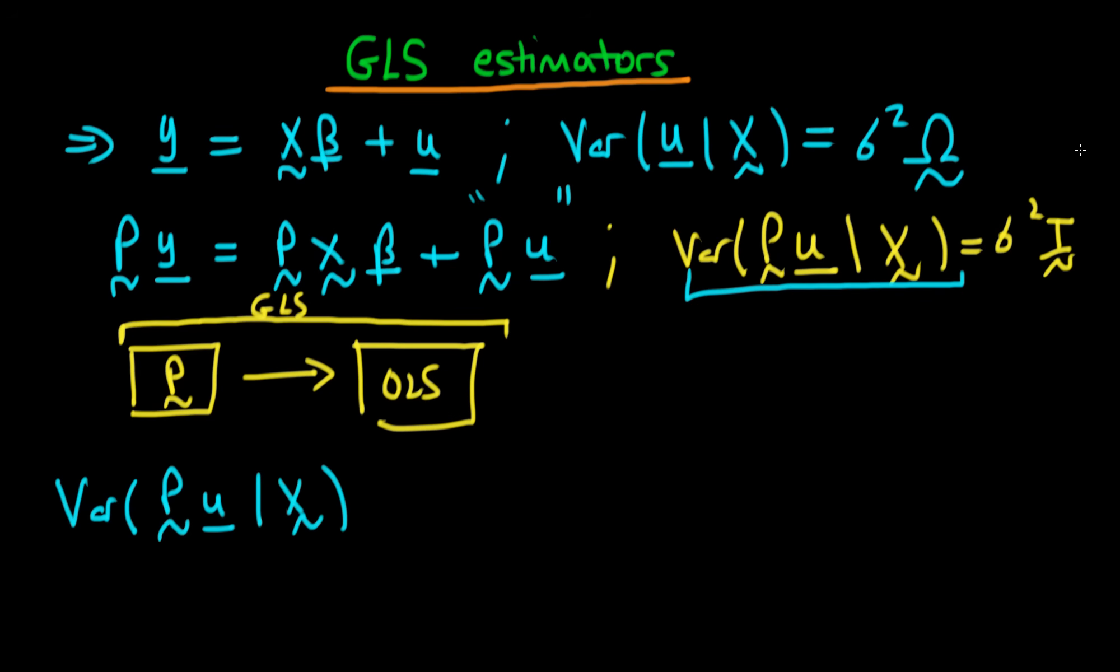We can expand it using the form which we have for the variance of a constant matrix A times a random vector X. We know that this is just equal to the matrix A times the variance of the random vector X times A transposed. And if we use this particular equation, we find that the variance of Pu given X is just equal to P times the variance of u given X times P prime.